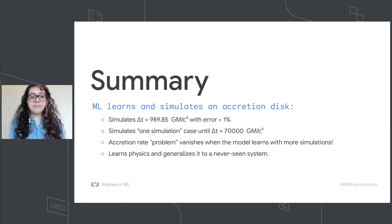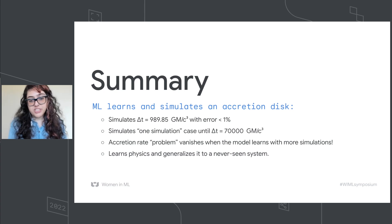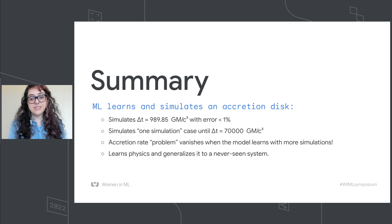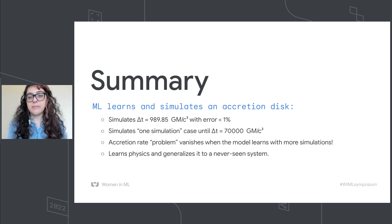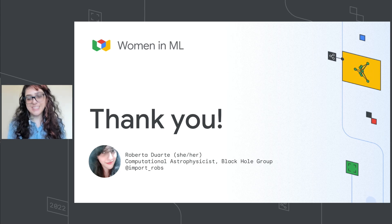In summary: machine learning can learn accretion disk simulations with deep learning techniques and simulate with very low error. The accretion rate problem vanishes when the model learns from more simulations, and the model can learn black hole physics and generalize to a never-seen system. The never-seen system simulated by AI is the key result here. Thank you so much.